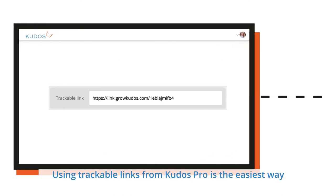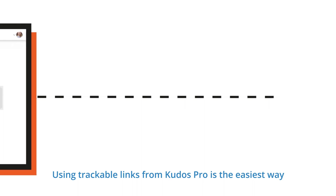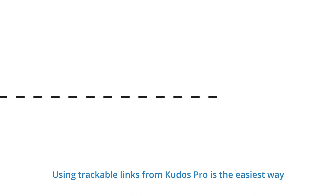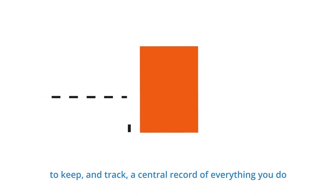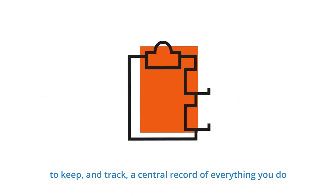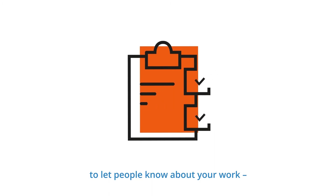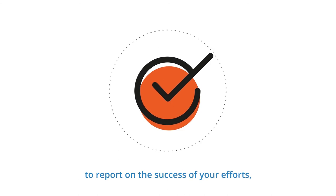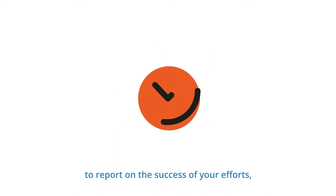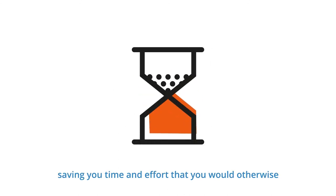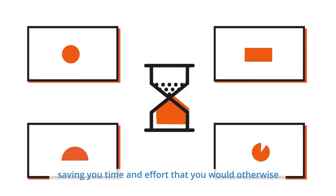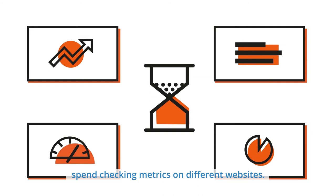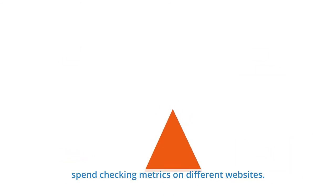Using trackable links from QDOS Pro is the easiest way to keep and track a central record of everything you do to let people know about your work. QDOS Pro then collects all the metrics you need to report on the success of your efforts, saving you time and effort that you would otherwise spend checking metrics on different websites.